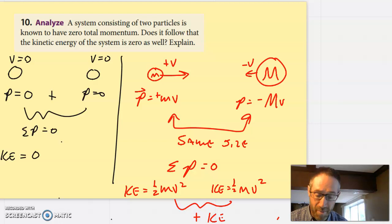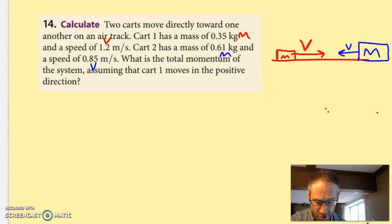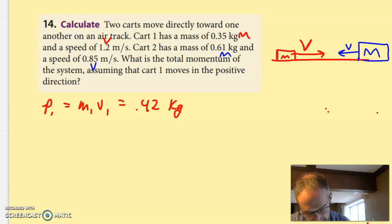Number 14 talks about two carts moving directly toward one another on an air track. Cart 1, which I drew in red, has a mass of 0.35 kilograms and a speed of 1.2 meters per second. Cart 2 has a mass of 0.61, so I drew it bigger, and it has a speed of 0.85 meters per second, so I drew that arrow smaller, and they're going at each other. It asks what's the total momentum of the system, assuming that cart 1 moves in the positive direction. So the momentum of cart 1 is one's mass, one's velocity. If you multiply those two things together, you get 0.42 units on the mass are kilograms, units on the velocity are meters per second.